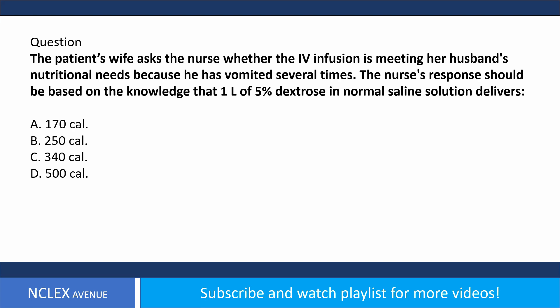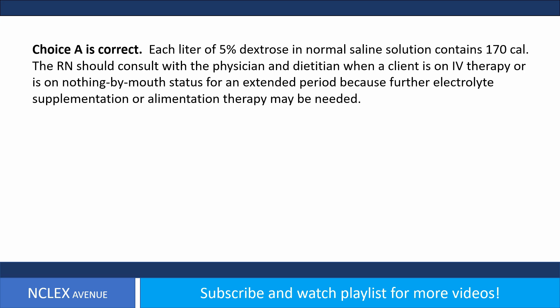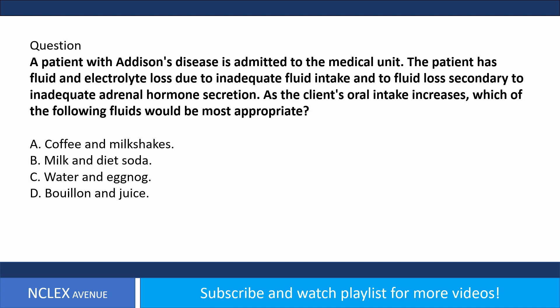Question: The patient's wife asks the nurse whether the IV infusion is meeting her husband's nutritional needs because he has vomited several times. The nurse's response should be based on the knowledge that one liter of 5% dextrose in normal saline delivers how many calories? A) 170, B) 250, C) 340, D) 500. Answer choice A is correct. Each liter of 5% dextrose in normal saline contains 170 calories. The RN should consult with the physician and dietitian when a client is on IV therapy or NPO status for an extended period.